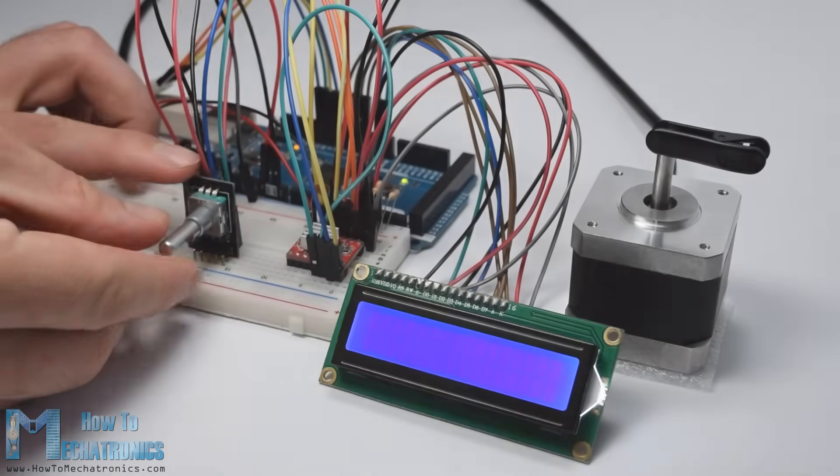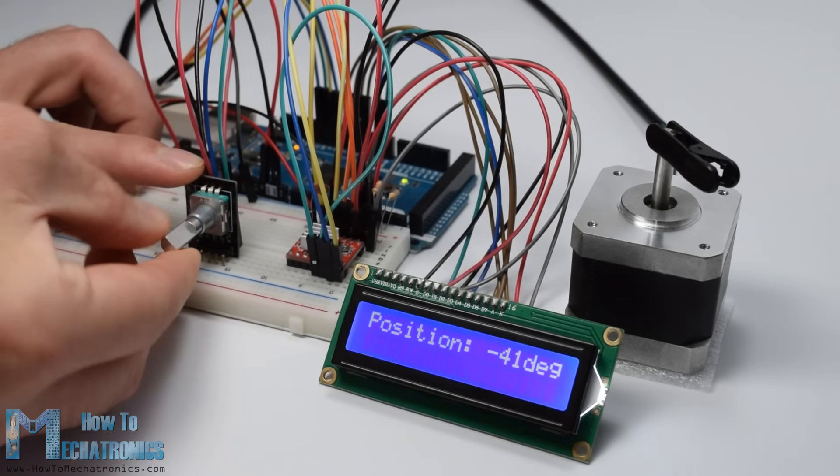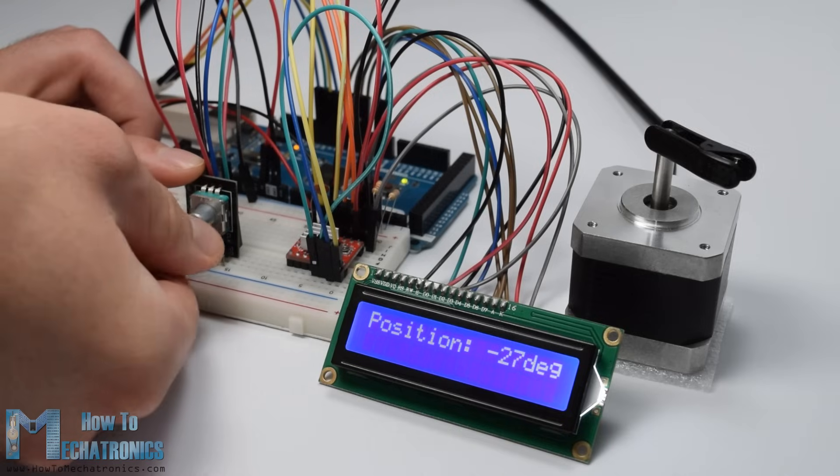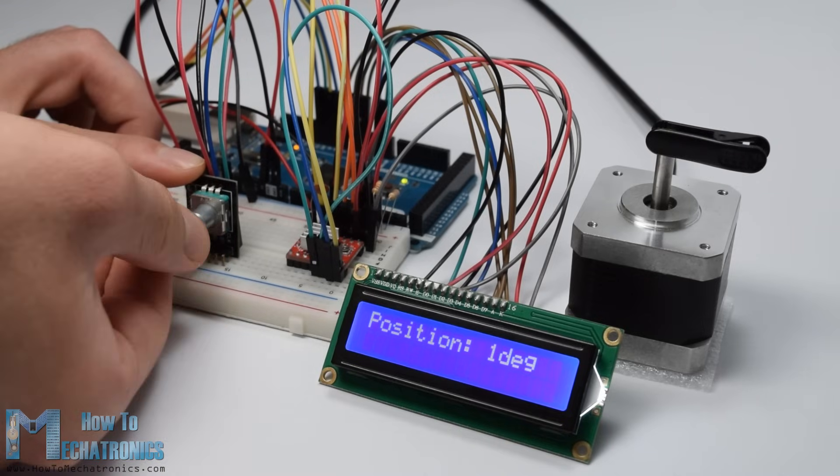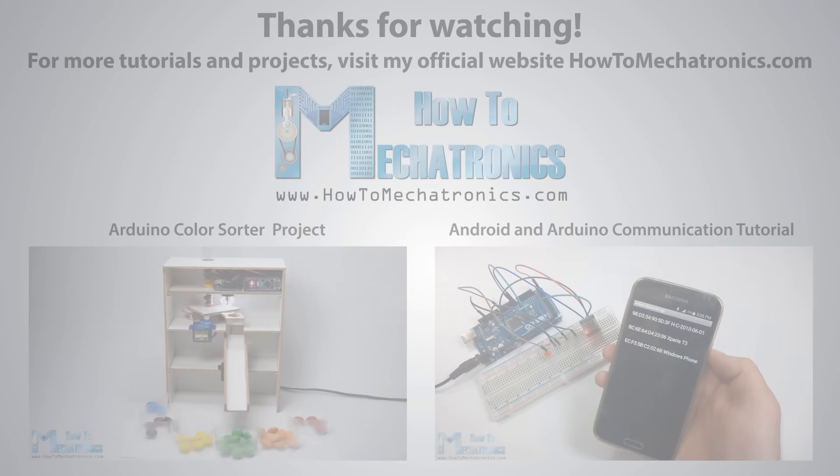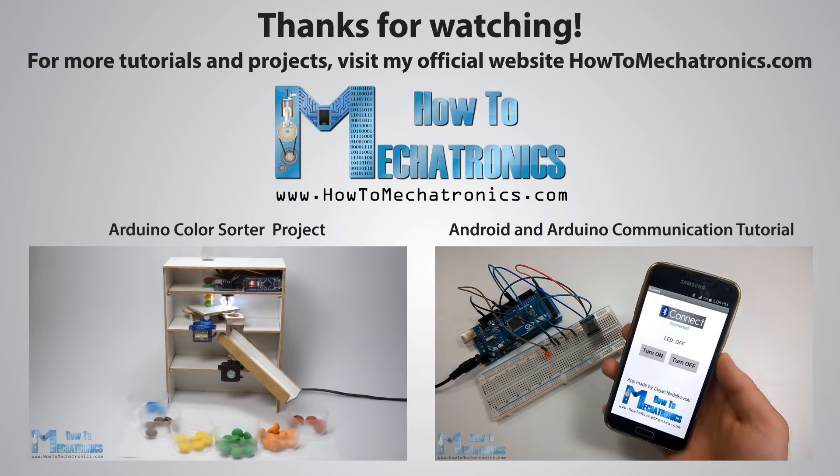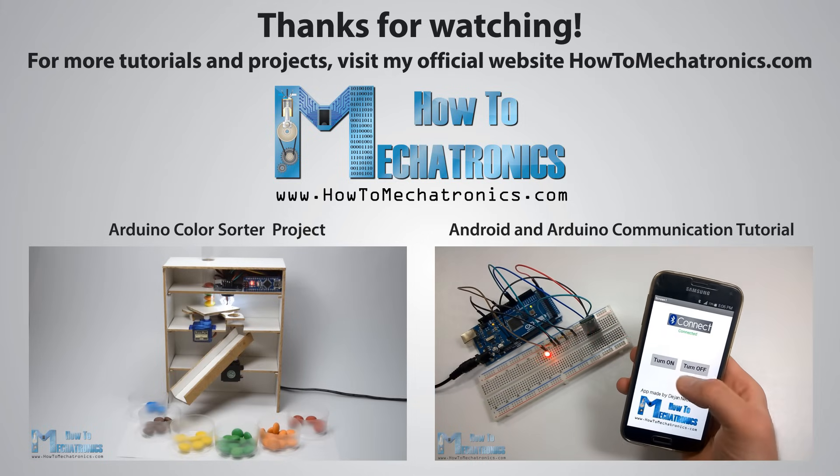In addition to this basic example, I made one more example of controlling a stepper motor position using the rotary encoder. You can find the source code of this example on my website article. Thanks for watching and for more tutorials and projects visit my official website howtomechatronics.com